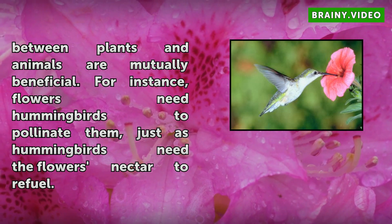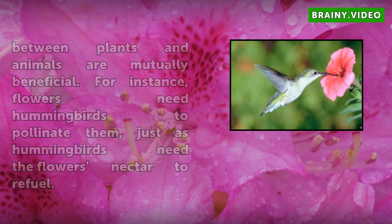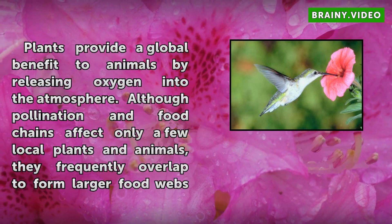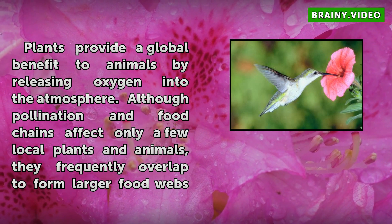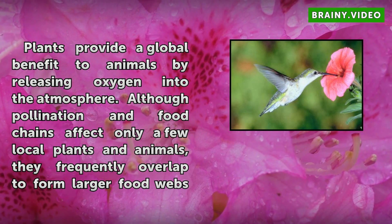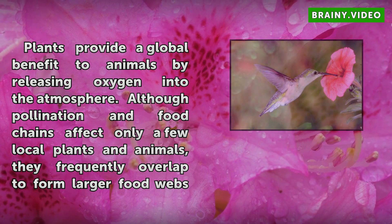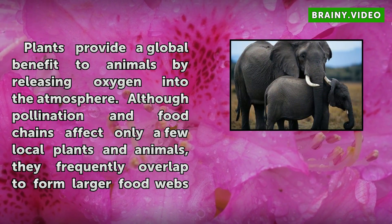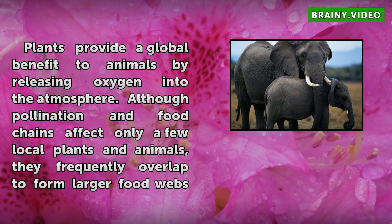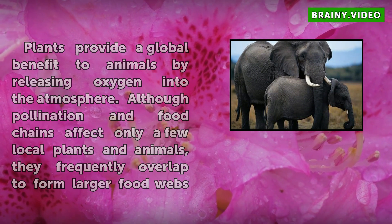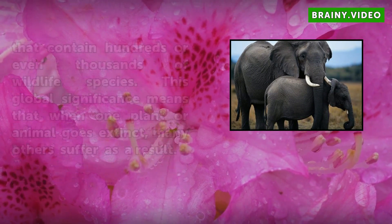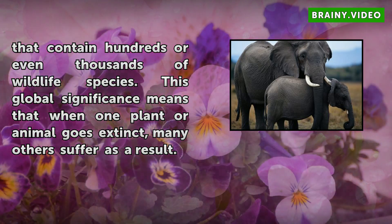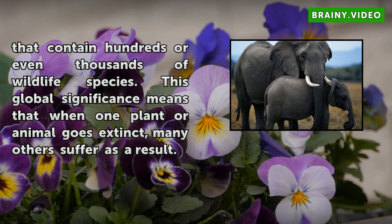Plants provide a global benefit to animals by releasing oxygen into the atmosphere. Although pollination and food chains affect only a few local plants and animals, they frequently overlap to form larger food webs that contain hundreds or even thousands of wildlife species. This global significance means that when one plant or animal goes extinct, many others suffer as a result.